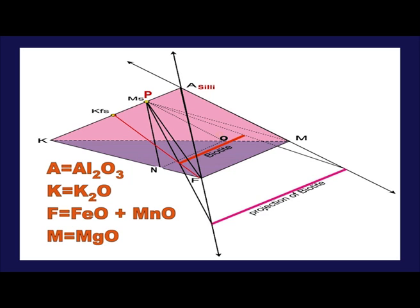A equals Al2O3, K equals K2O, F equals FeO plus MnO, and M equals MgO. Any muscovite-bearing assemblage can be represented graphically by projecting each component's point in the AKFM tetrahedron onto the AFM plane by a straight line drawn through the muscovite point P. Every such assemblage contains muscovite and may contain quartz or plagioclase in addition to the phases connected by the lines in the AFM projection.